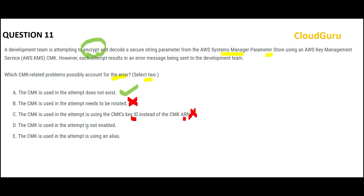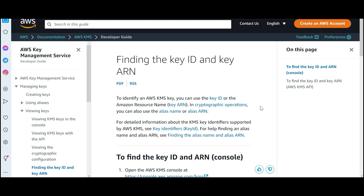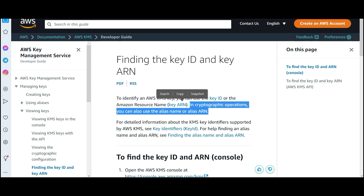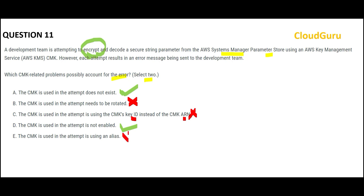Option D says the CMK being used is not enabled — yes, that can happen. Either it is not enabled or it does not exist; it could be one or the other. Option E says the CMK is using an alias. Per the documentation, in cryptographic operations like encryption and decryption, you can also use alias names or alias ARNs. Since you can use an alias, a key ID, or a key ARN, using an alias will not cause an error. So E is wrong. Options A and D are my final answers.